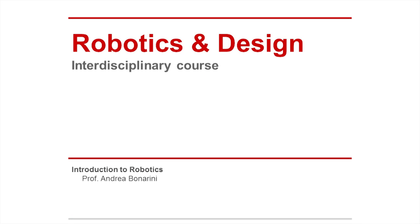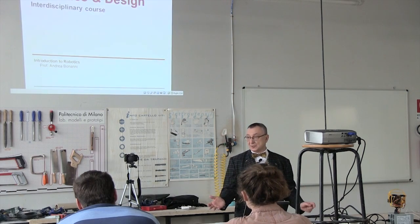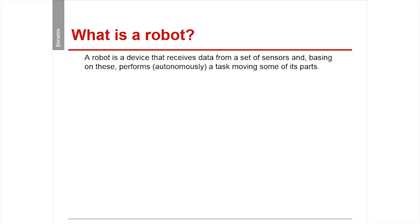This first lesson is an introduction to robotics — a very general one. A robot is a device — mechanical, electronic — that has sensors receiving data from the external world, and based on this information performs a task by moving something. The fact that there are motors and we have to move something is relevant.